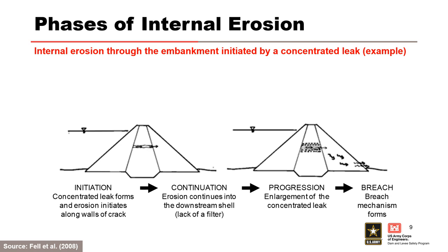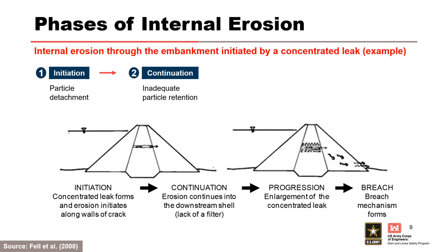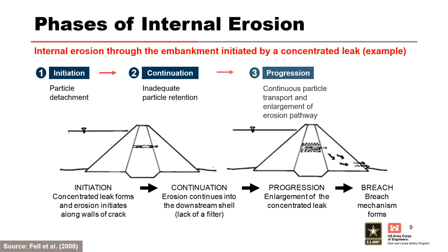The process of internal erosion has been generally broken into four phases in the best practices manual and ICOLD Bulletin 164. Each phase will be discussed in more detail throughout this training. Initiation involves detachment of soil particles. Continuation involves inadequate particle retention based on filtering considerations. Progression involves continuous particle transport and enlargement of the erosion pathway. Failure or breach is characterized by the sudden, rapid, and uncontrolled release of impounded water or liquid-borne solids.